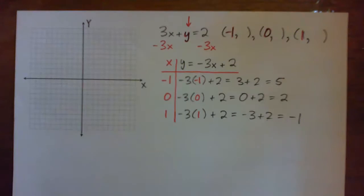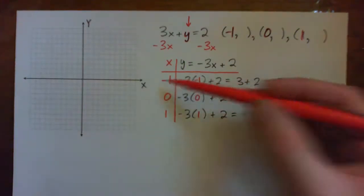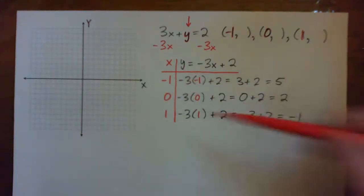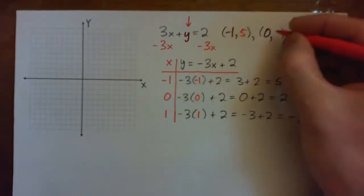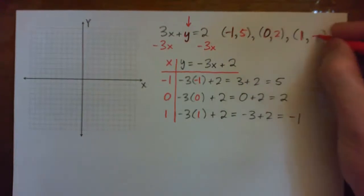And now we can plot these points. It's negative 1, 5, 0, 2, and 1, negative 1. So negative 1, 5, that's 1 point. 0, 2, and 1, negative 1.